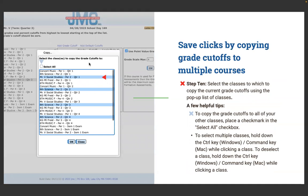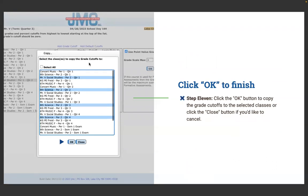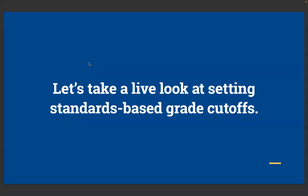Steps ten and eleven: select the courses to copy the current grade cutoffs to using the pop-up list, using the Control or Command key to select specific courses. Click OK to copy, or Close to cancel. If you're experimenting with competency-based grading conversion to a letter grade for only some courses, you can have multiple different cutoffs in JMC.